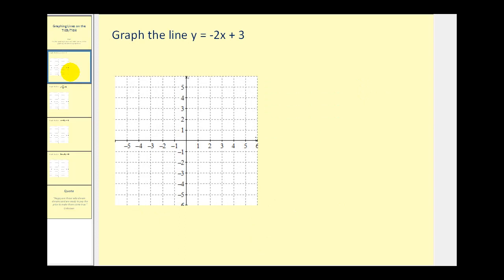Let's say we want to graph the line y equals negative two x plus three. Slope-intercept form is the perfect form to enter into the graphing calculator because the graphing calculator does require the equation to be solved for y.